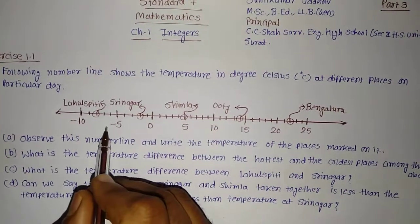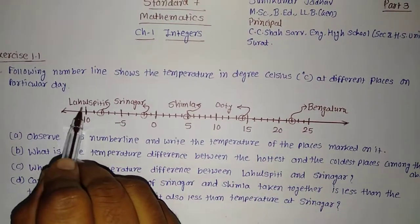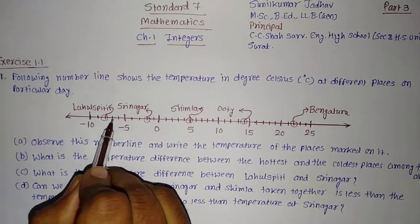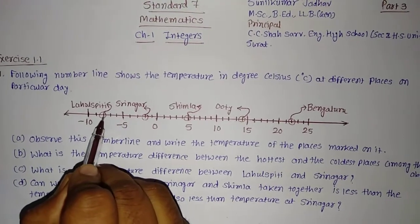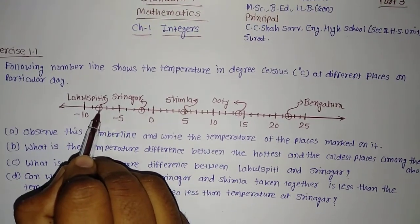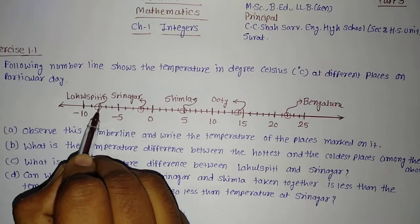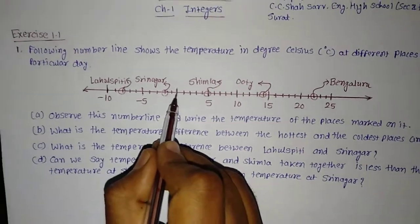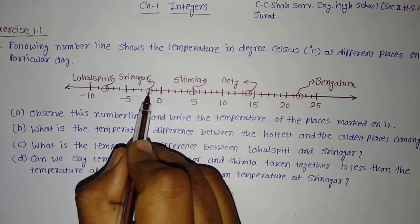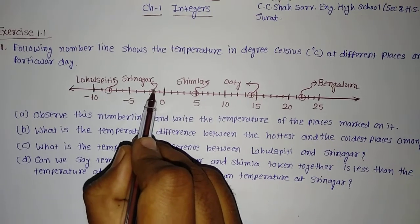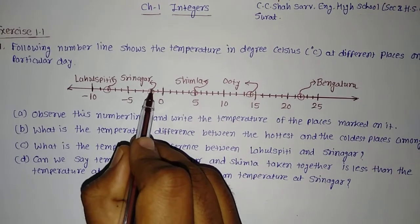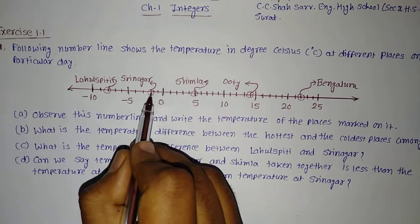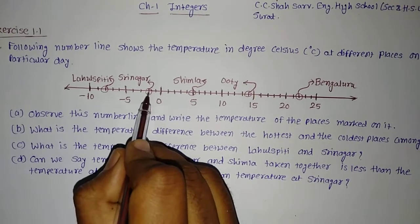First of all, we will see the temperature of Lahulspiti. You can see it is minus 5, then minus 6, minus 7, and minus 8. So the temperature of Lahulspiti is minus 8 degrees Celsius. The temperature of Srinagar — it is 0, then minus 1 and minus 2 — so the temperature of Srinagar is minus 2.